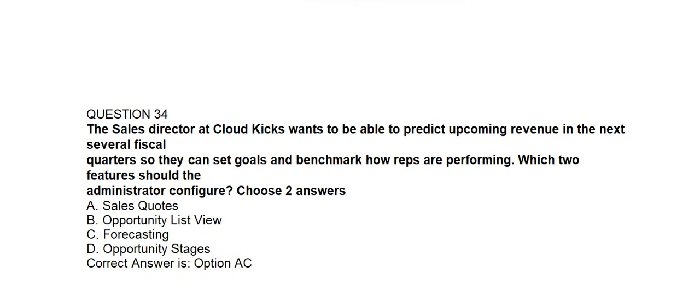Question number thirty-four. The Sales Director at Cloud Geeks wants to be able to predict upcoming revenue in the next several fiscal quarters so they can set goals and benchmark how representatives are performing. Which two features should the administrator configure? Option A: Sales Quotes. Option B: Opportunity List View. Option C: Forecasting. Option D: Opportunity Stages. Correct answer is Option A and Option C: Sales Quotes and Forecasting.